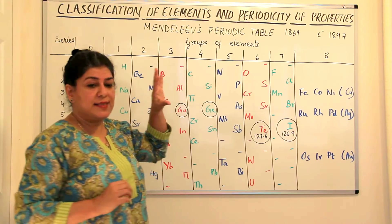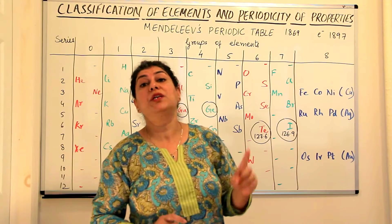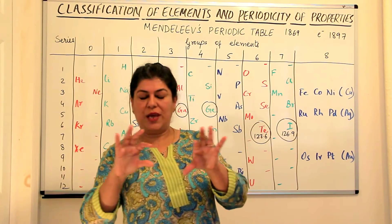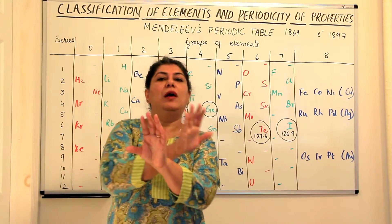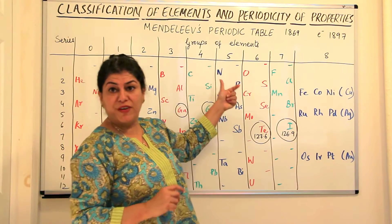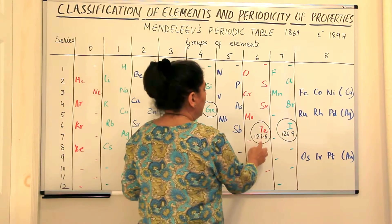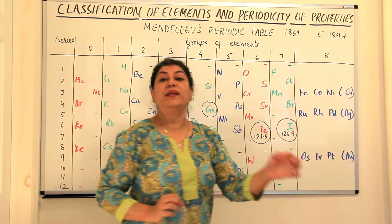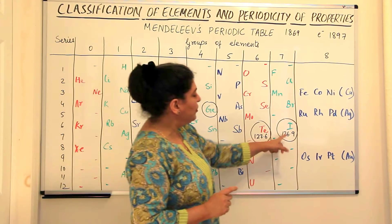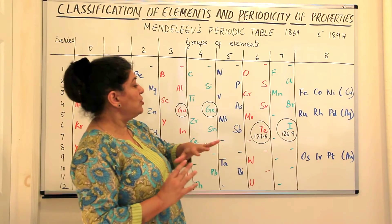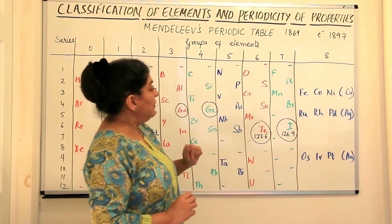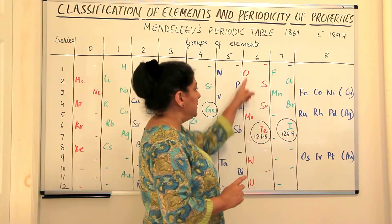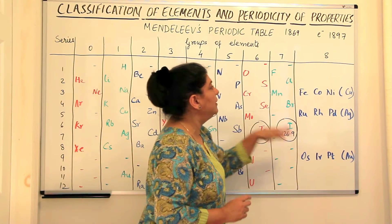Mendeleev was very intelligent — he realized there were limitations in measurements. If an element's properties did not quite match its position by increasing atomic mass, he prioritized similar properties. For example, tellurium has a mass of 127.6 and iodine has a mass of 126.9. Although iodine's mass is less than tellurium's, the properties of iodine resemble bromine, chlorine, and fluorine. So he placed iodine in the seventh group, while placing tellurium in the group it chemically resembled, rather than following strict atomic mass order.